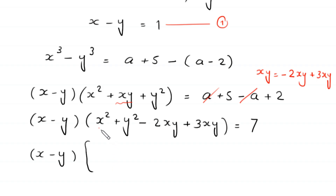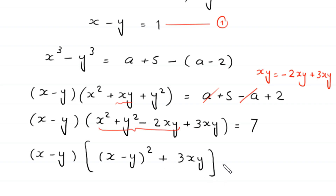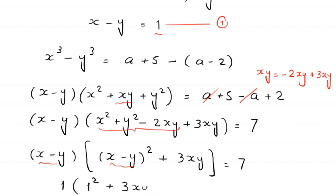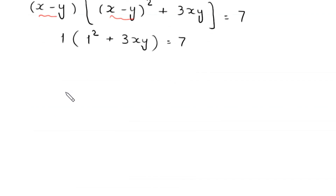So (x - y) times ((x - y)² + 3xy) = 7. We replace x - y with 1 from equation 1, giving us 1 times (1² + 3xy) = 7. This simplifies to 1 + 3xy = 7.